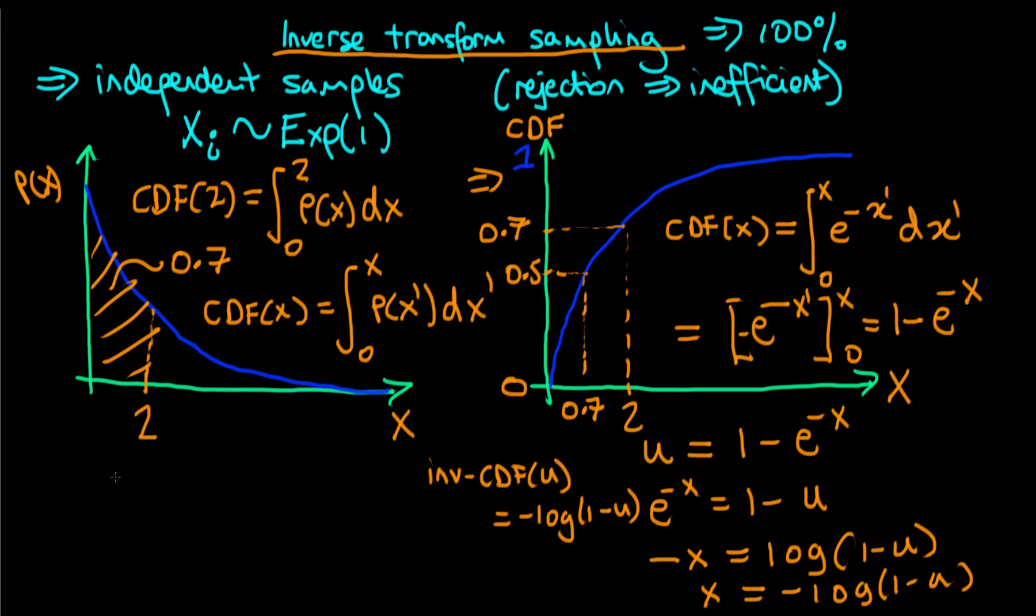Now that we have our inverse CDF function, we can define what inverse transform sampling actually is. The idea is that in each iteration of the algorithm, and I'm going to call i here to correspond to a given iteration, we first sample a value of u from a uniform distribution between 0 and 1. We then use that u value to calculate, using our inverse CDF, a corresponding value of x. It turns out that this x will actually be distributed as the distribution that we were trying to sample from in the first place. So if I use xi equals minus log of 1 minus ui, then we get out an xi which is exponentially distributed with a rate parameter of 1.